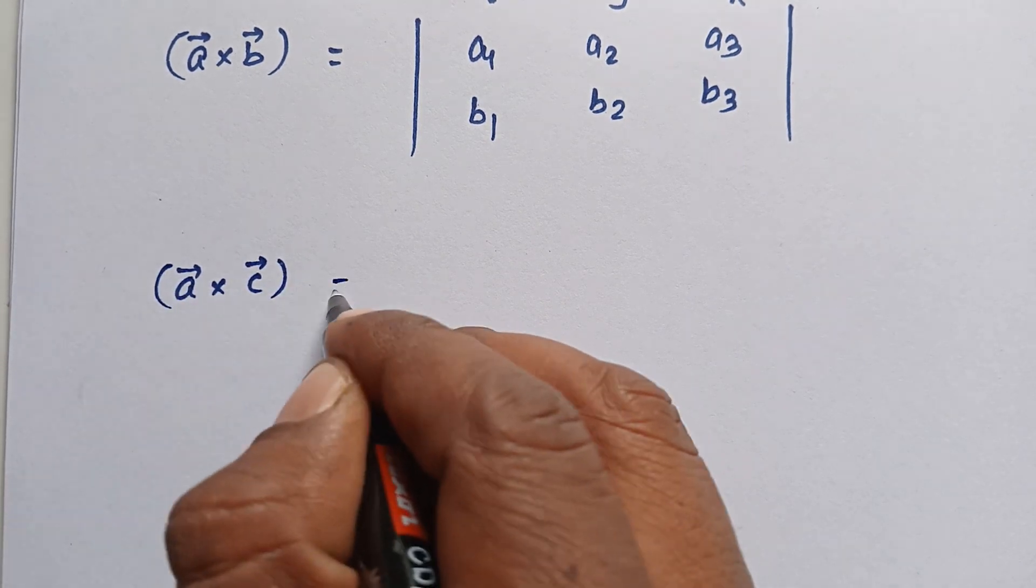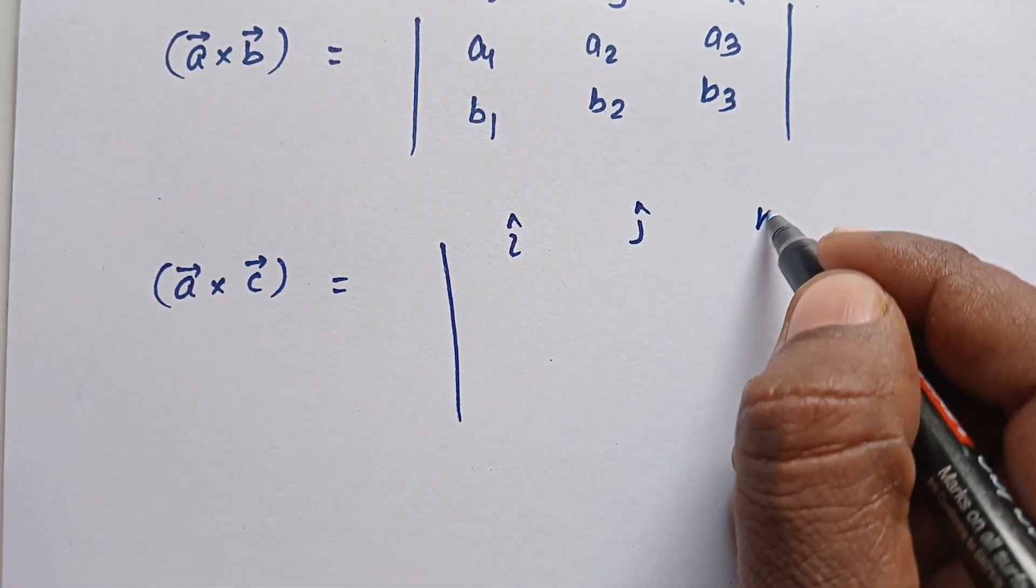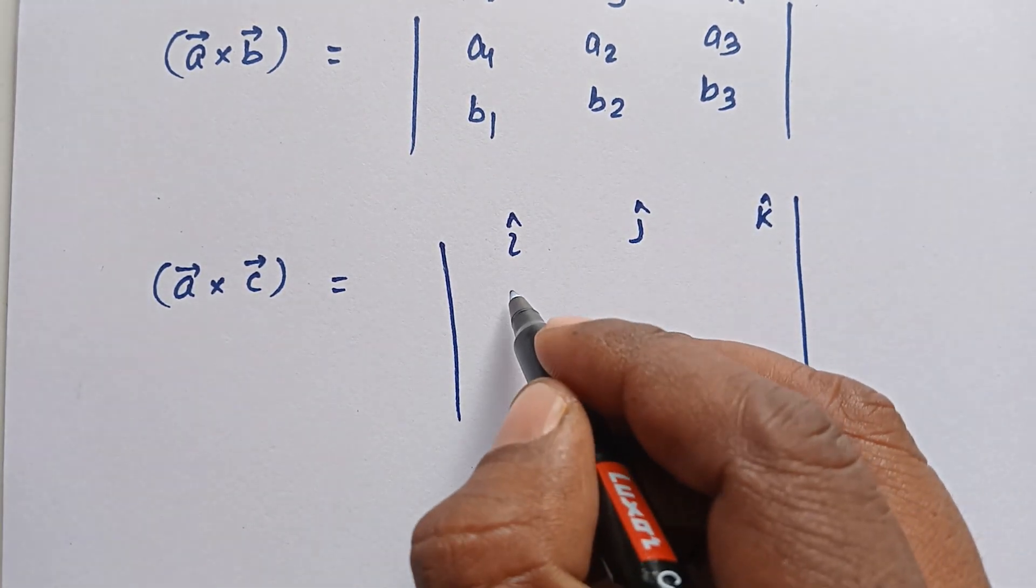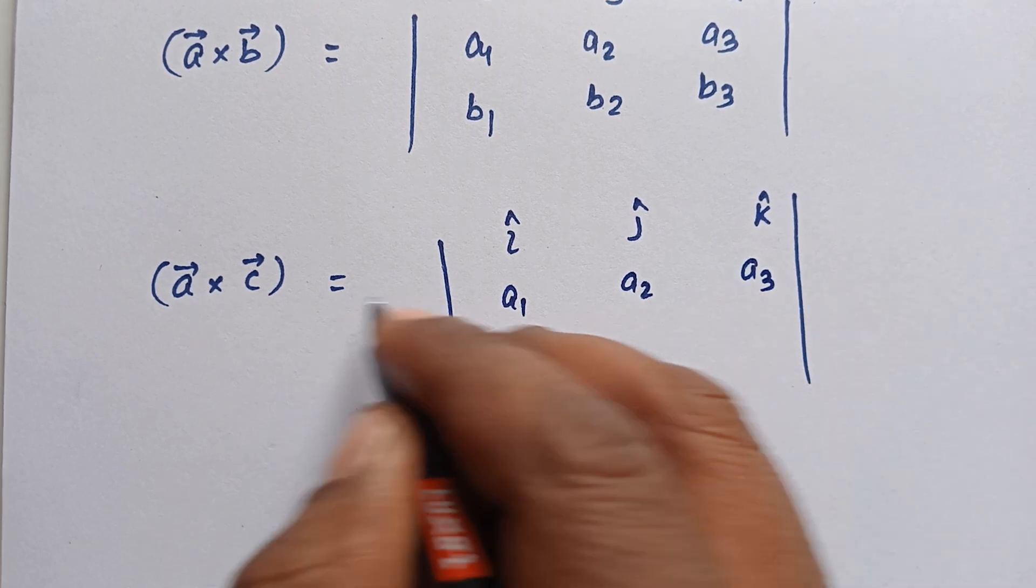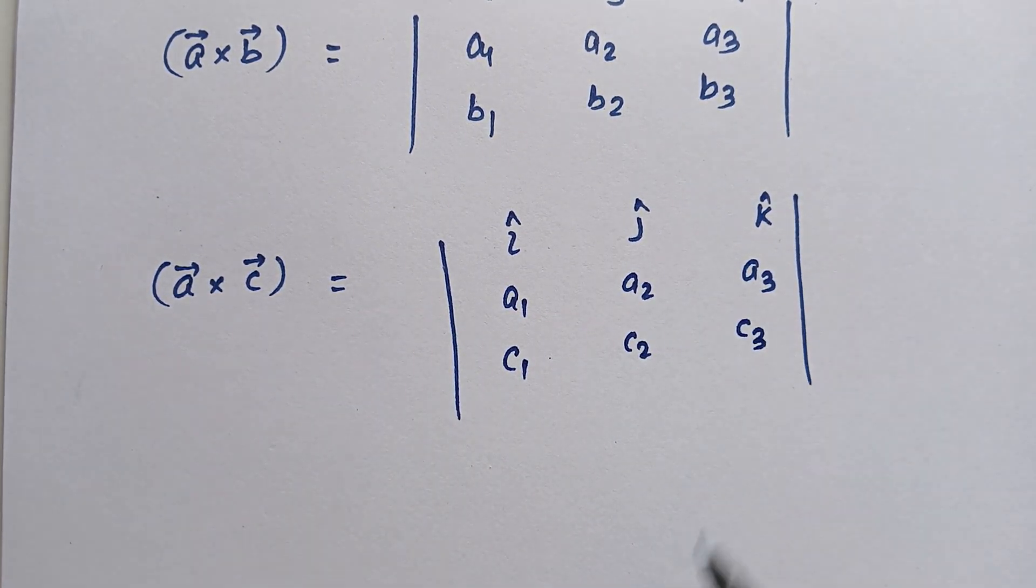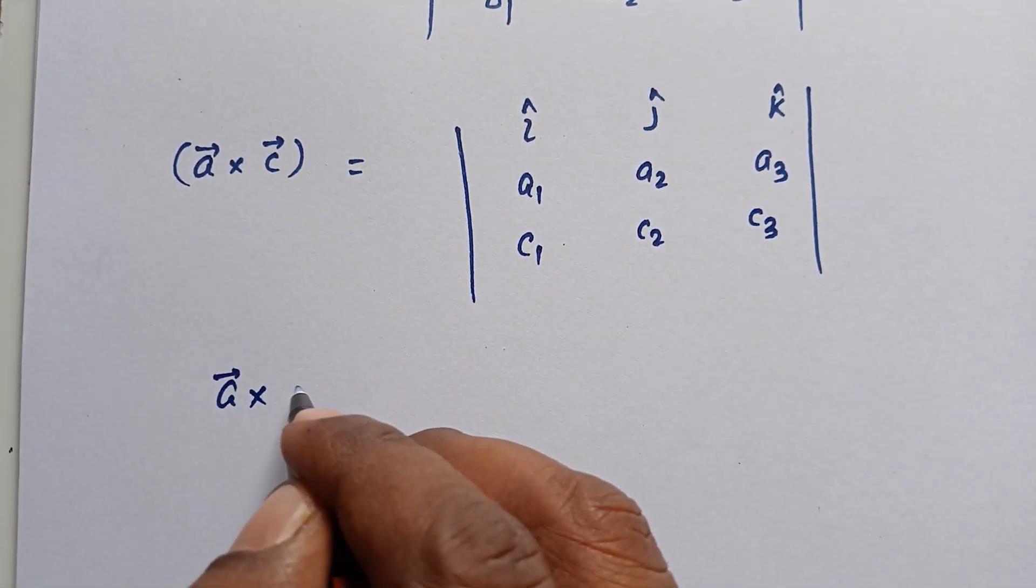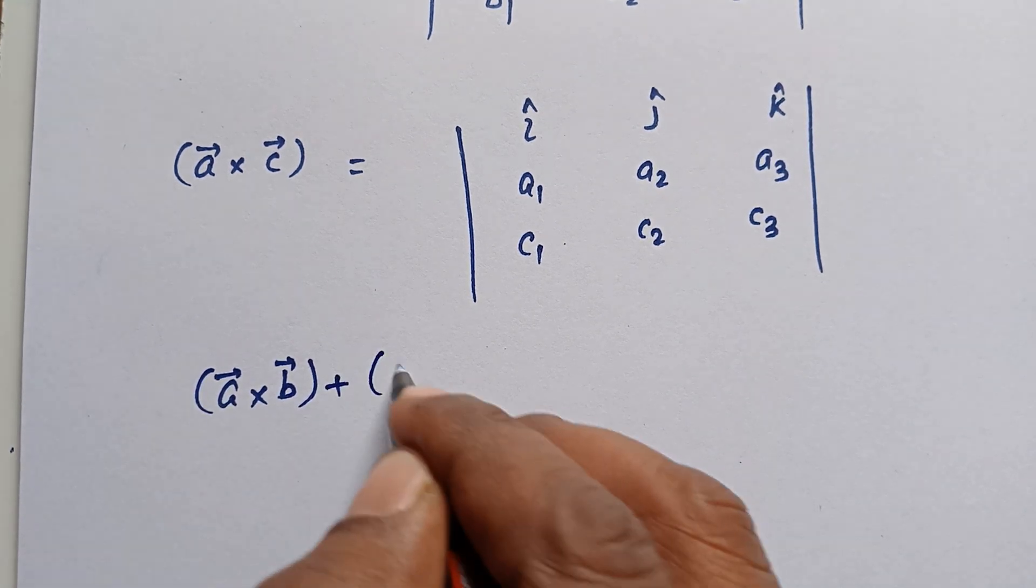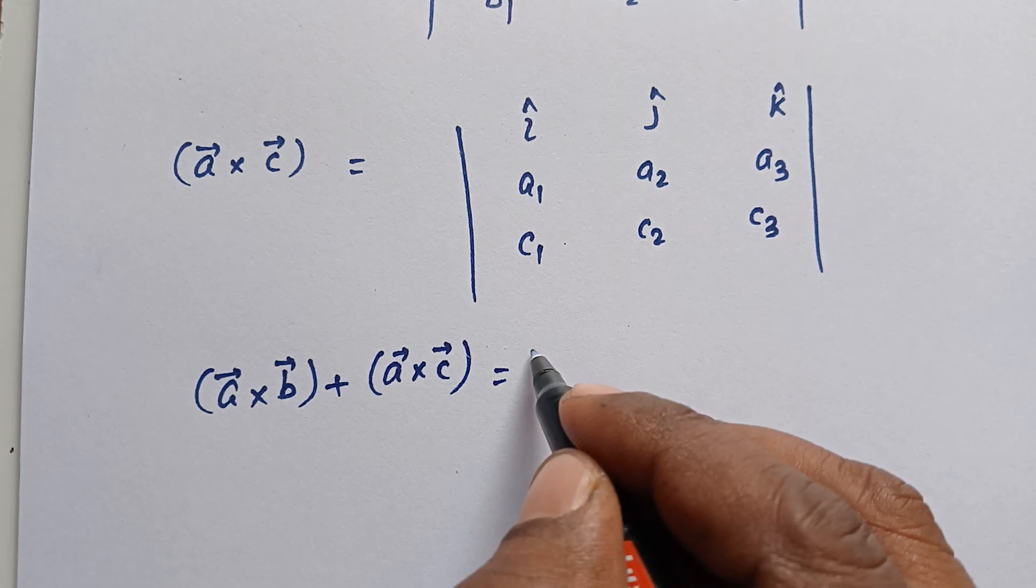Then we need A×C. For A×C: î, ĵ, k̂; A value is a1, a2, a3; and C equals c1, c2, c3. So we finally write the RHS: A×B plus A×C.